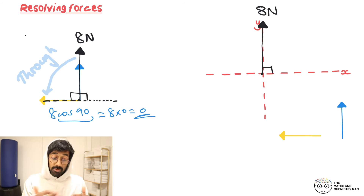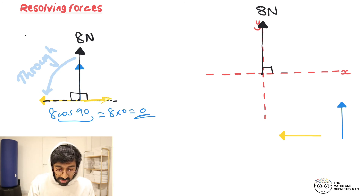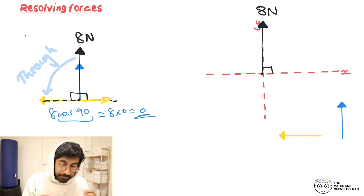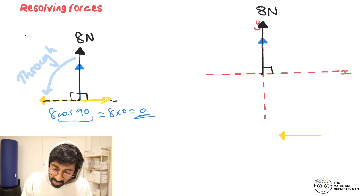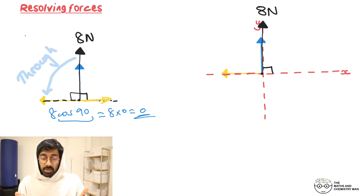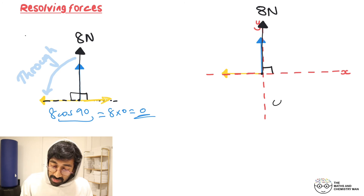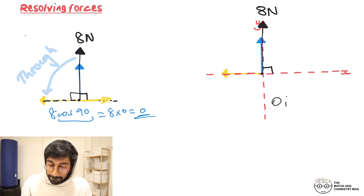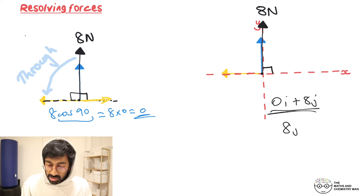The same applies on the positive x side — also 90 degrees, also 0. So in i and j form, we write 0i + 8j, or just 8j, since there is no horizontal component at all.